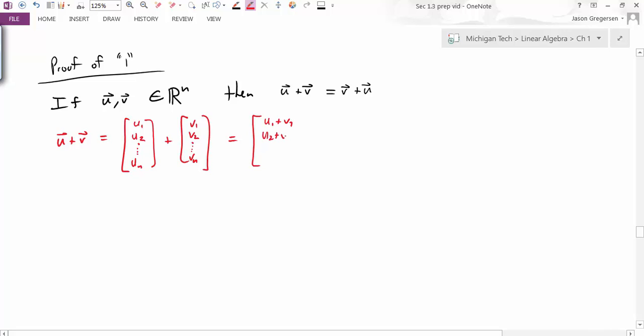Because of the definition of vector addition, I can say that the sum of these two vectors is u1 plus v1, u2 plus v2, dot, dot, dot, u_n plus v_n. So I can say that these two sides are equal based on, or by the definition of vector addition.